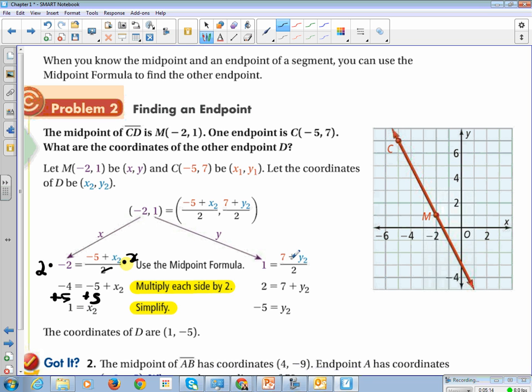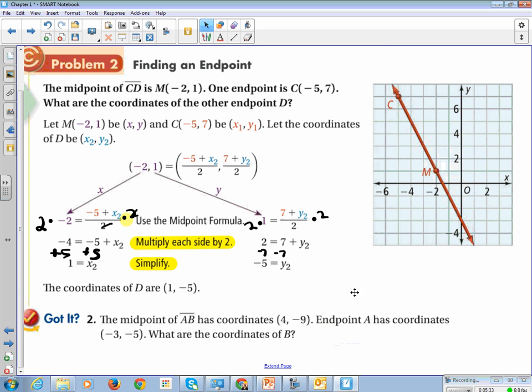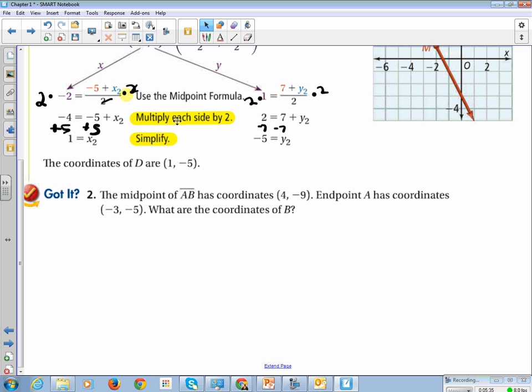Now, we do the same thing here. We multiply by 2. We get 2 equals 7 plus y2, and then we subtract 7. And we get the coordinate of the y-value is, the y-value of our coordinate is negative 5. Alright, so let's test that out. See if we got it.